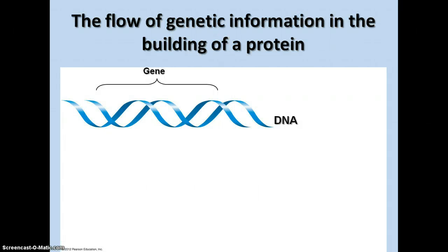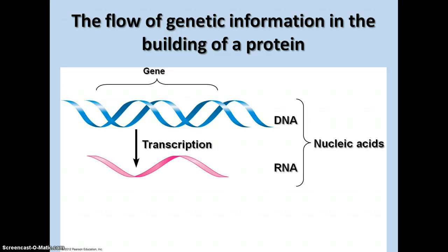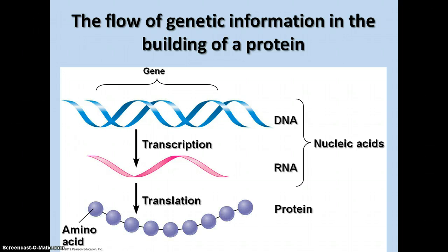The flow of genetic information in the building of proteins goes like this: from the gene in the DNA, through transcription to the RNA — both of which are nucleic acids — and then through translation into the protein. So we're going from the language of the DNA nucleotides to the RNA nucleotides, and then finally through translation to the different language of the amino acids in the protein.